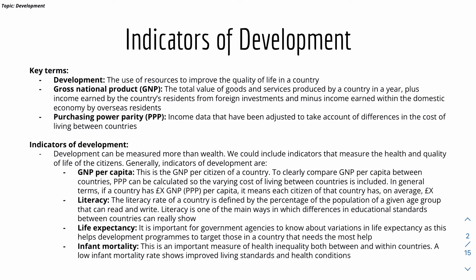Starting with Indicators of Development, here are some key terms for this subtopic. Development is basically the use of resources to improve the quality of life in a country. Then we have Gross National Product, or GNP, which is actually different from GDP, which we'll look into later. GNP is the total value of goods and services produced by a country in a year, plus the income earned by the country's residents from foreign investment, and minus income earned within the domestic economy by overseas residents. It sounds complicated, so we'll compare it to GDP in a minute, which will be much clearer.